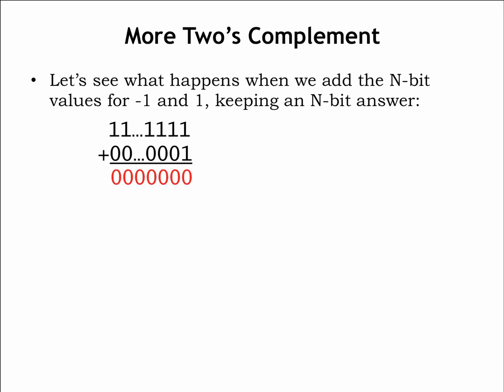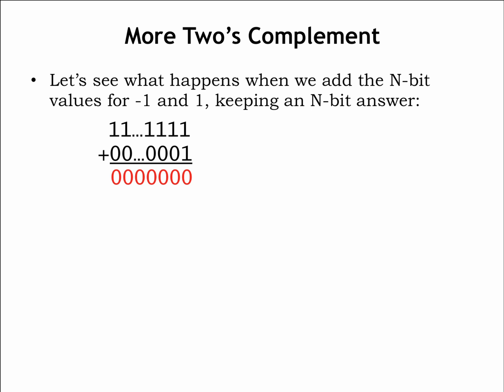Let's see what happens when we add the n-bit values for negative 1 and 1, keeping an n-bit answer. In the rightmost column, 1 plus 1 is 0, carry the 1. In the second column, the carry of 1 plus 1 plus 0 is 0, carry the 1, and so on. The result is all 0s, the representation for 0. Perfect!